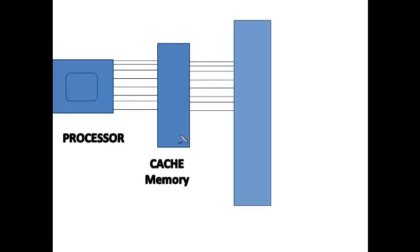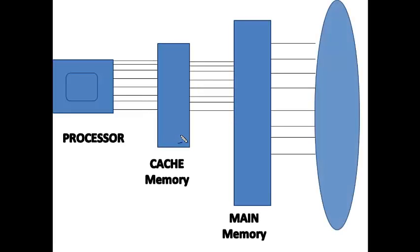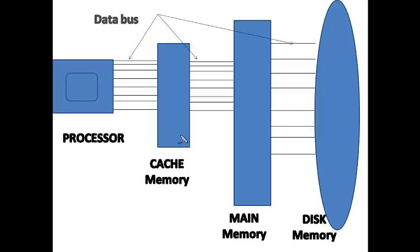Now I will tell you how these different memories are connected with each other and with the processor. The processor is connected with cache memory, cache memory is connected with main memory, and main memory is connected with disk memory. Data transfer is done among these memories and the processor with the help of a data bus.